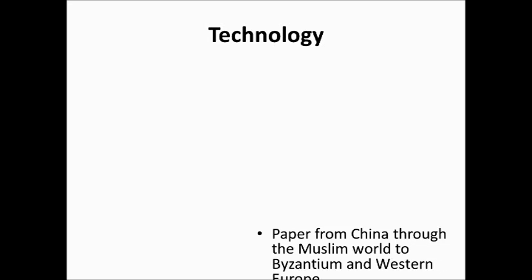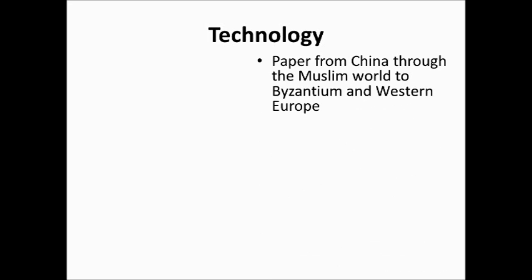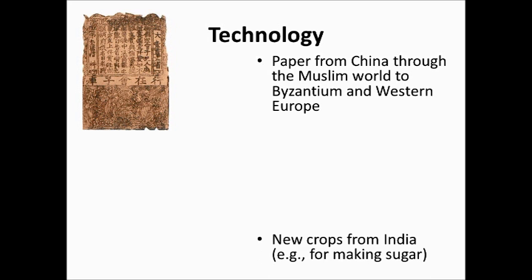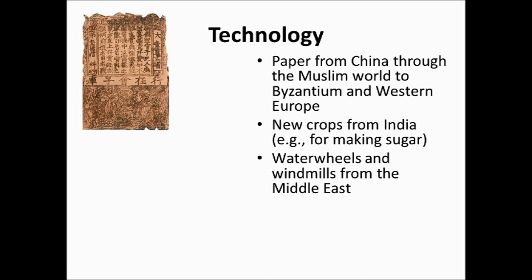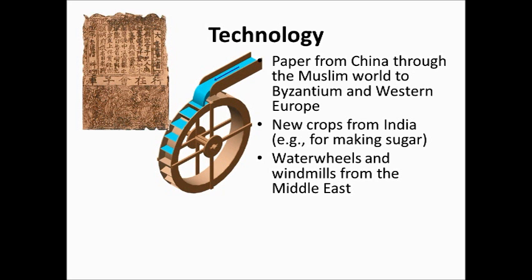What type of technology was spread? Paper from China spread through the Muslim world, then to the Byzantine world, and eventually to western Europe. New crops spread from all over — India and China contributed sugar and rice, which became popular in other parts of Asia as well. Water mills were used to grind and mill grain and also as a power source.